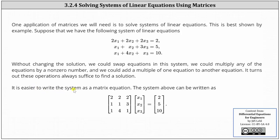It's easier to write the system as a matrix equation. The system above can be written as a matrix equation shown below, where we have the coefficient matrix times the variable matrix equals the constant matrix. Remember, we can also refer to these column matrices as vectors.